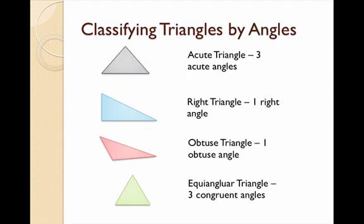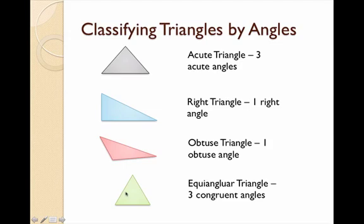Now we're going to classify triangles by their angles. An acute triangle has three acute angles — all three angles are less than 90 degrees. A right triangle has exactly one right angle, marked with a box, showing that two sides are perpendicular. An obtuse triangle has exactly one obtuse angle, greater than 90 degrees. An equiangular triangle has all three angles congruent, and in fact if a triangle is equiangular it is also equilateral — all three sides are also congruent. So that's how we classify triangles by their sides and by their angles.